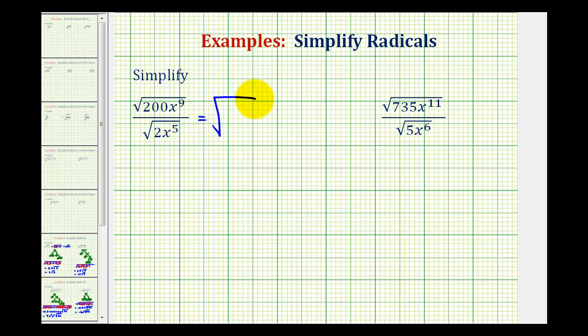This is normally not the case because a simplified radical cannot contain a fraction, but in this case, we'd have the square root of 200x to the ninth divided by 2x to the fifth. And since this fraction simplifies nicely, it is going to help us simplify the original expression.